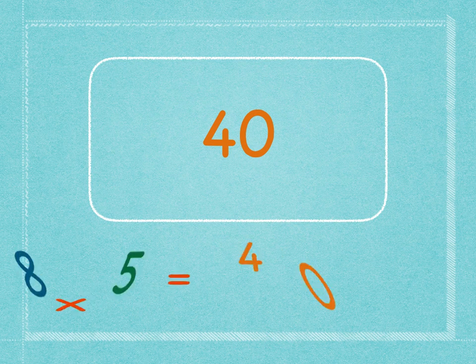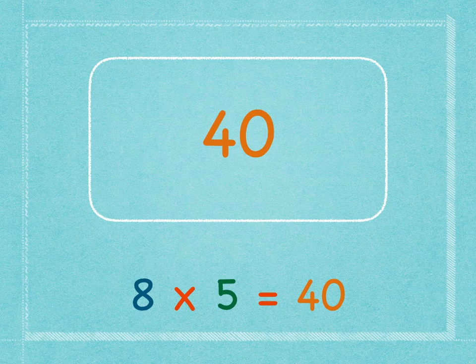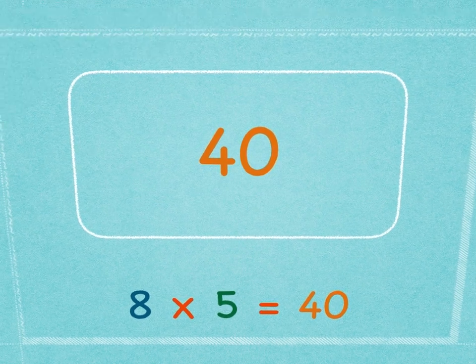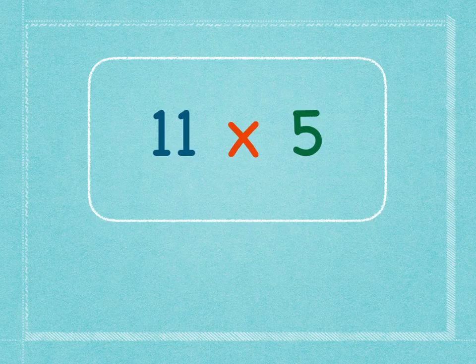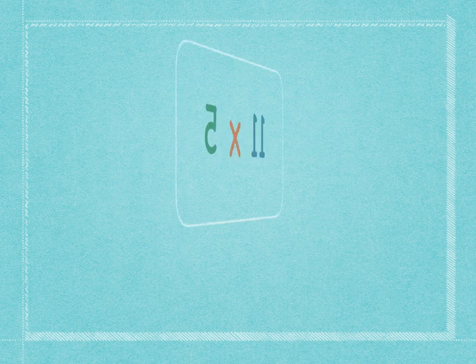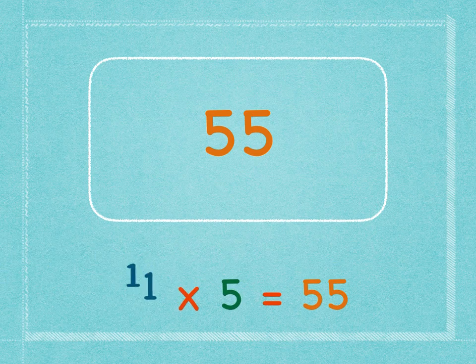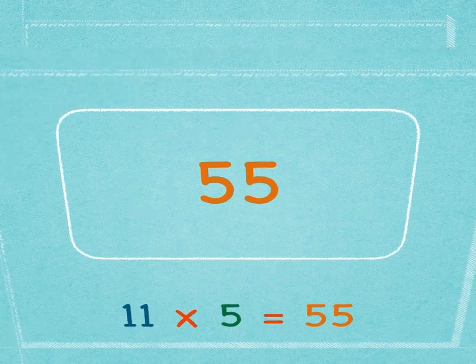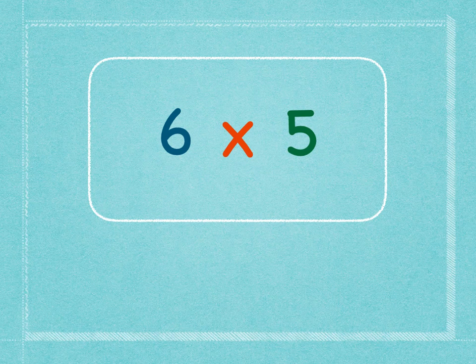Eight times five is forty. Eight times five is forty. Eleven times five is fifty-five. Eleven times five is fifty-five.